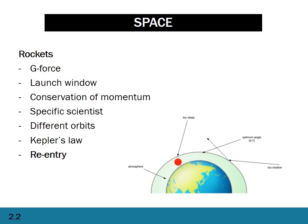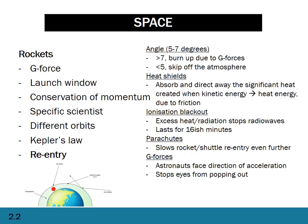Finally, let's look at shuttle re-entry. There are a few things to keep in mind when bringing satellites or rocket ships back into orbit. The angle needs to be between five and seven degrees. If the angle is greater than seven degrees, the rocket is coming in too steep — a lot of heat will be produced and it'll burn up due to g-forces and heat. The astronauts will die. If it's less than five degrees, the rocket actually skips off the atmosphere, like skipping a stone off water, and literally bounces back into space.